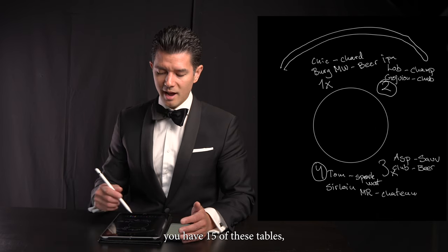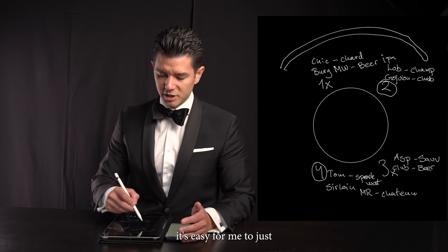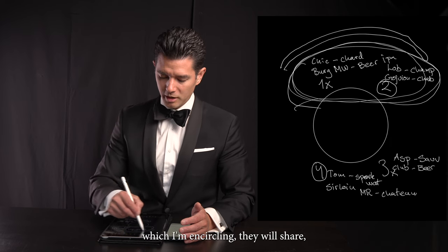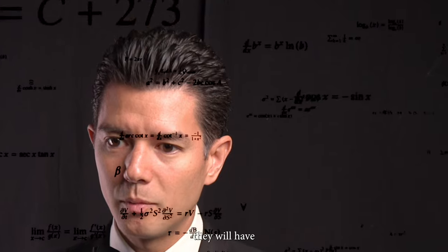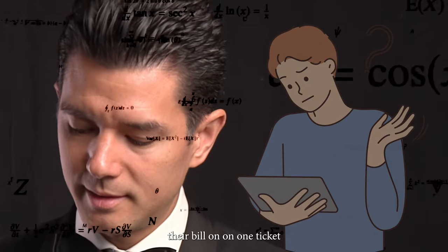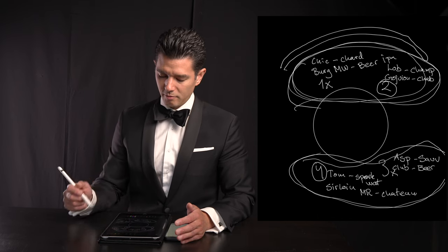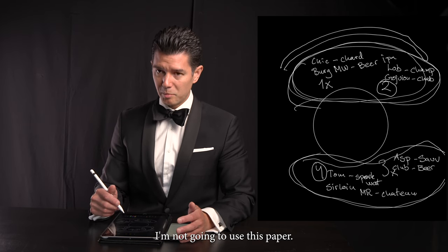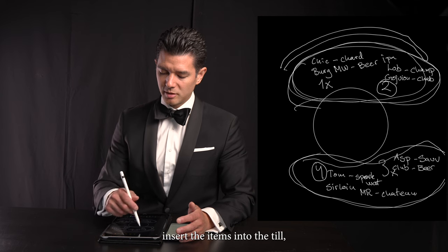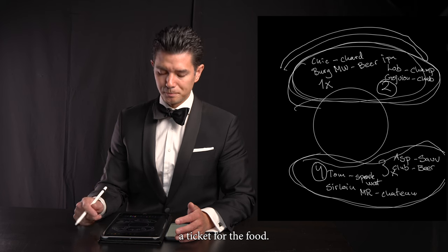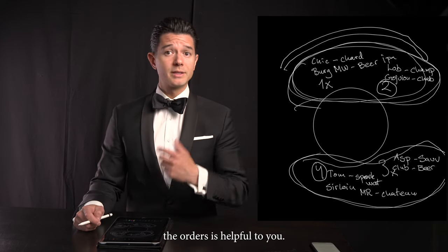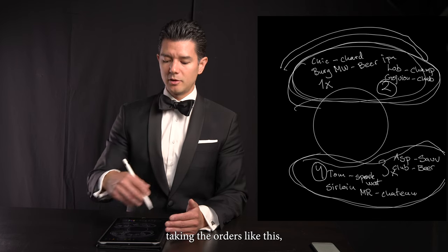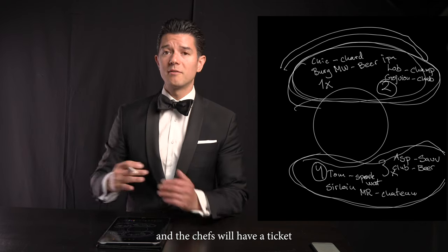Later on when it's time to pay the bill, if I have 15 tables, it's easy to look at my notes and see that the two people on the sofa will share one bill, and the other couple would like to pay separately. When I go to the kitchen, I won't use this paper — I'll insert the items into the till, which gives the chefs a ticket for the food.